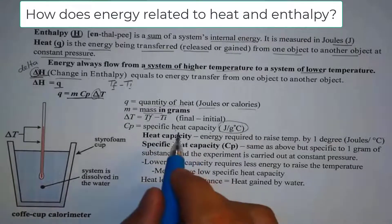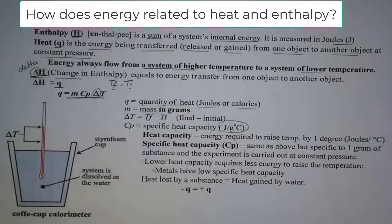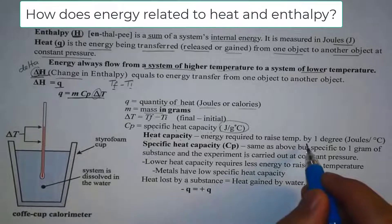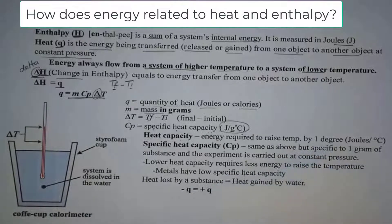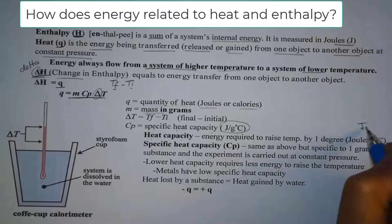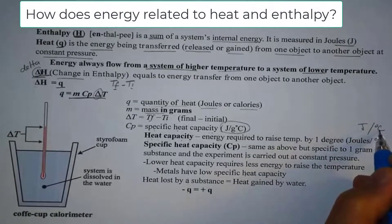So what is heat capacity and how is it different from specific heat capacity? Well, first of all, heat capacity is the energy required to raise one degree Celsius. So how much energy, that's why we have Joules over Celsius. How much energy do I need to raise one degree Celsius?